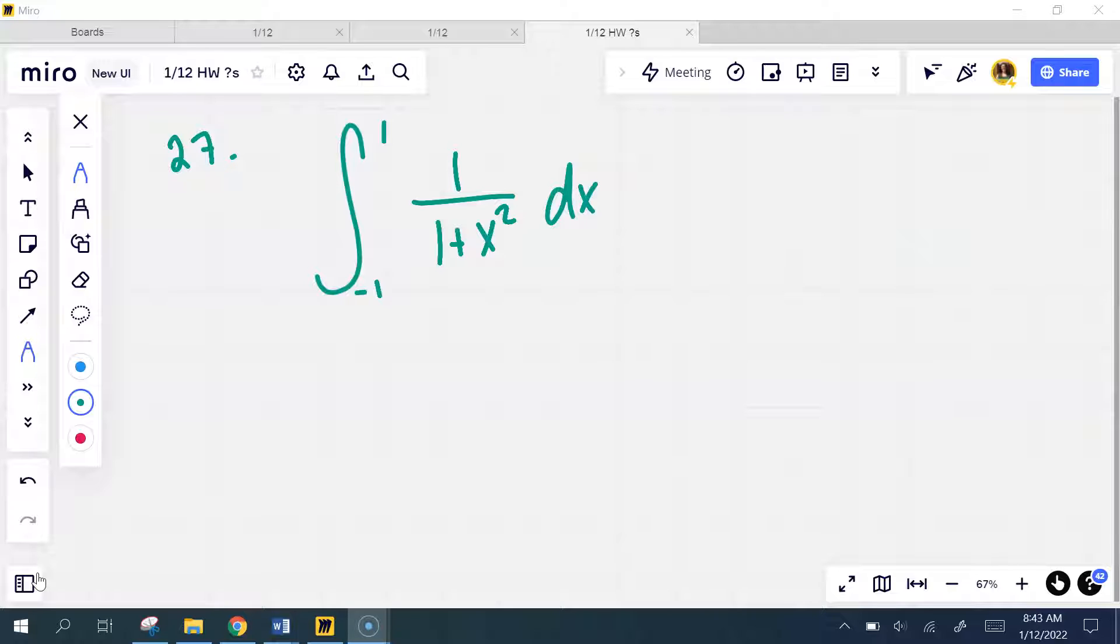You have to know them backwards and forwards or else you wouldn't recognize this. The derivative of inverse tangent x is of course 1 over 1 plus x squared. That's on your sheet that you have.